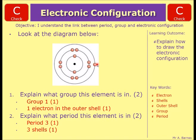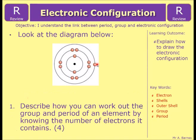If you have, have a go at the review section which will end this video. Which is, describe how you can work out the group and the period of an element by knowing the number of electrons it contains. And that's worth 4 marks.